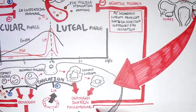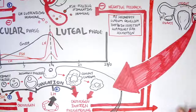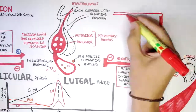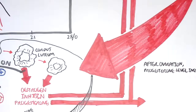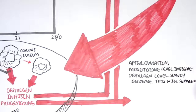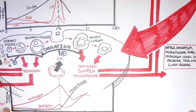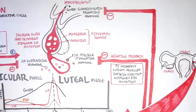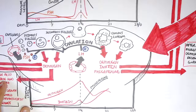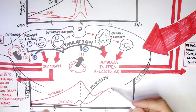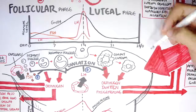Progesterone is the most important hormone in the luteal phase and has many functions, one of which is having a negative effect on the hypothalamus — inhibiting the secretion of GnRH. After ovulation, during the luteal phase, progesterone levels increase slowly and estrogen levels decrease slowly, suppressing GnRH release. Progesterone will inhibit GnRH release, which also affects the release of LH and FSH. So during the luteal phase, as progesterone and inhibin increase, this causes a decrease in GnRH, LH, and FSH.